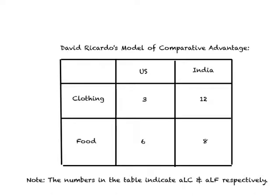How can we explain foreign trade if a country is more efficient than the other one in every line of production? In order to explain this, Ricardo came up with the term comparative advantage. We know the U.S. has an absolute advantage in production of both goods over India. Look at the difference in absolute advantage between the U.S. and India in clothing: it is nine units of labor time. In food, it is two units of labor time. So where does the U.S. have the greatest absolute advantage? It is in clothing.